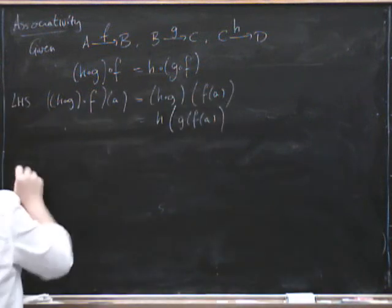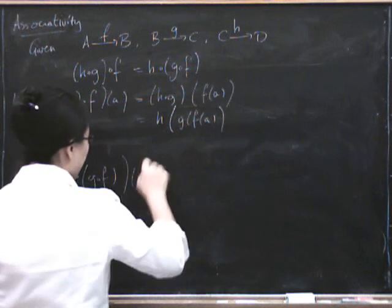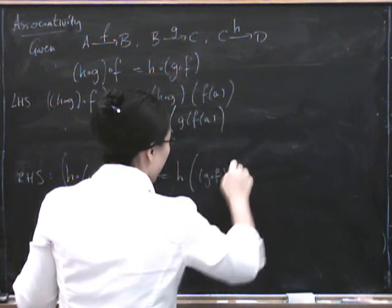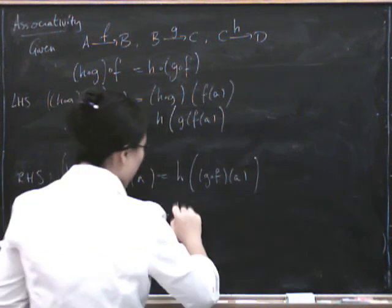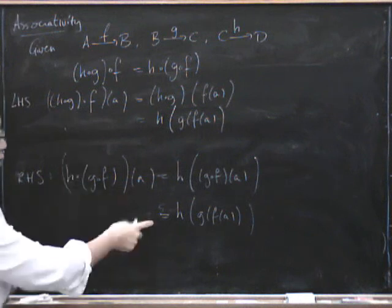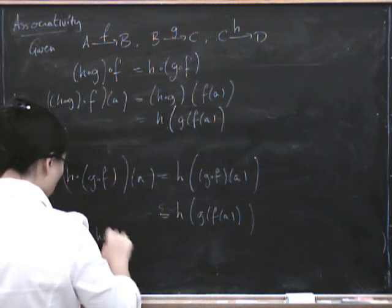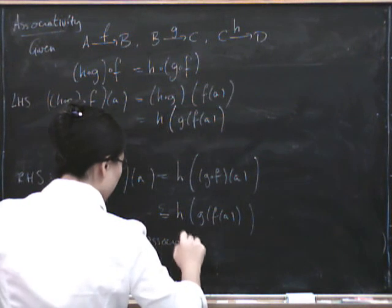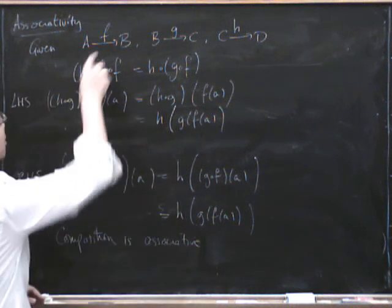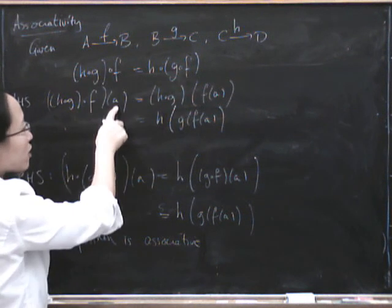So the right hand side, we get H of G of F applied to A is well it's H of that applied to A so it's H of G composed with F of A but what's G composed with F of A? It's just G of F of A. Okay so the left hand side equals the right hand side so composition is associative. We say composition is associative. And notice that we had to check here that this composite equals that composite as functions. So how did we do it? We checked that they gave the same answer on every element A.